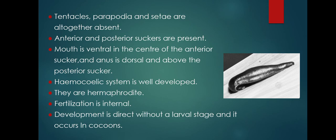Anterior and posterior suckers are present. The anterior sucker is usually smaller than the posterior sucker. With the help of anterior and posterior suckers along with circular and longitudinal muscles, they are able to move from one place to another. The mouth is found in the anterior sucker, and the posterior sucker is disc-shaped. The function of suckers is for attachment and locomotion.